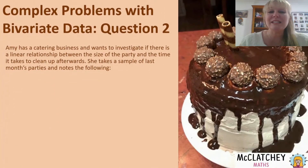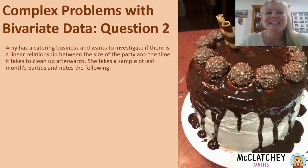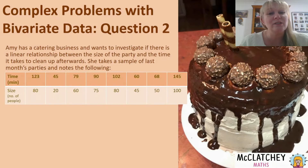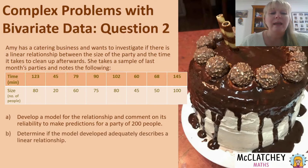Let's look at our question. Amy has a catering business and she wants to investigate if there's a linear relationship between the size of a party and the time it takes to clean up afterwards. She takes a sample of last month's parties and notes the different times for clean up and different size parties she catered. She wants to know if we can develop a model for the relationship, comment on its reliability to make predictions for a party of 200 people, and determine if the model adequately describes a linear relationship.